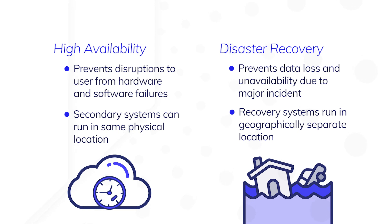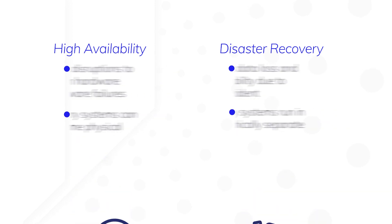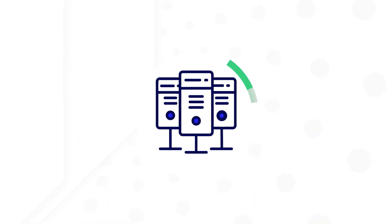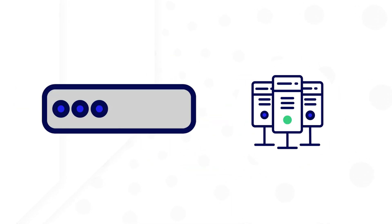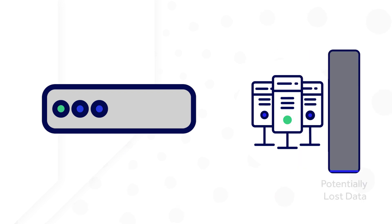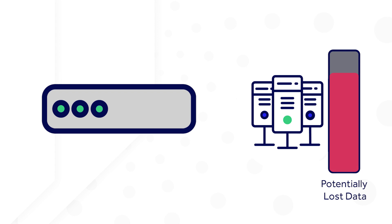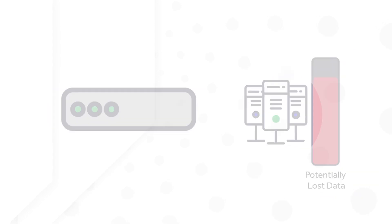Disaster recovery is for when an entire site becomes unavailable and a new site must be started up. When starting up a recovery site, Appian must load data from backups of the primary site. Any data not backed up will be lost. The amount of data that you can tolerate to lose is called the Recovery Point Objective, or RPO, and determines how frequently you need to backup your data.